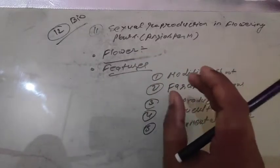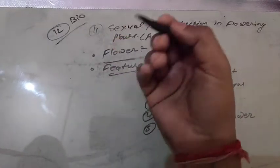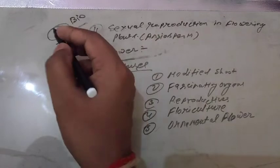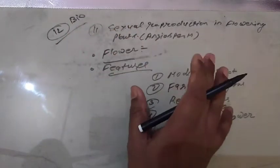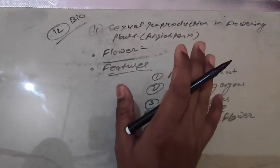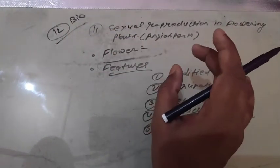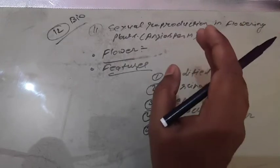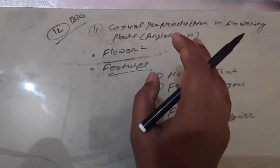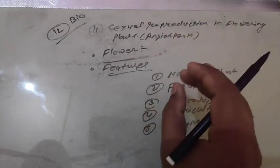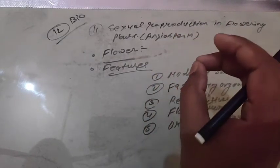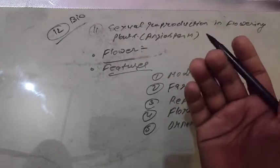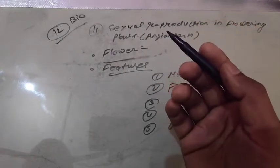Students, it's time to begin Chapter 2. Chapter 2 for Unit 1, it is the matter of Class 12 Biology. The name of Chapter 2 is 'Sexual Reproduction in Flowering Plants.' The other name of flowering plants is angiospermic plants.